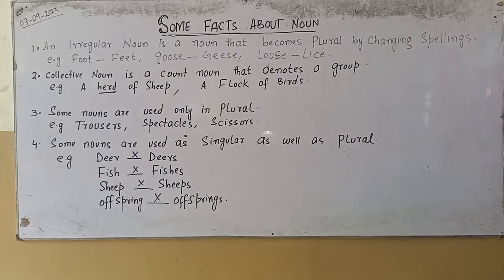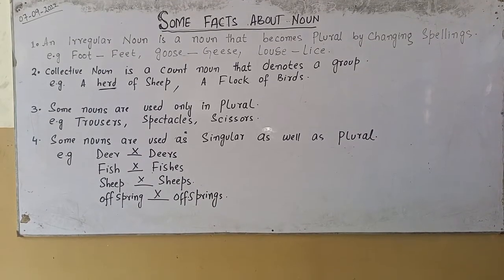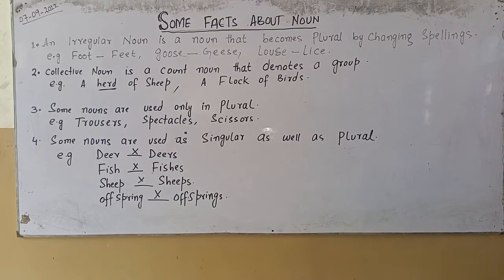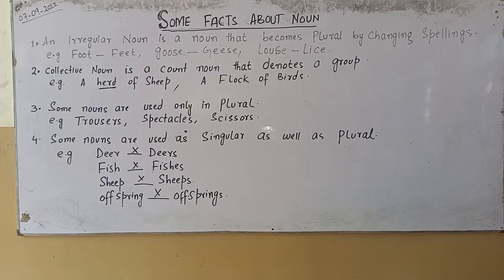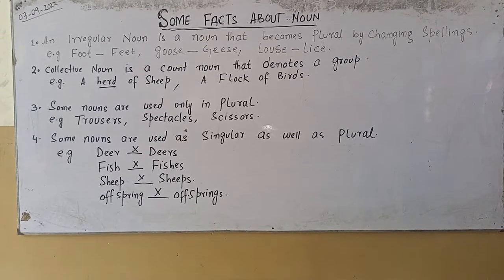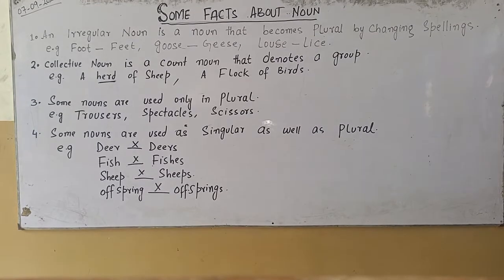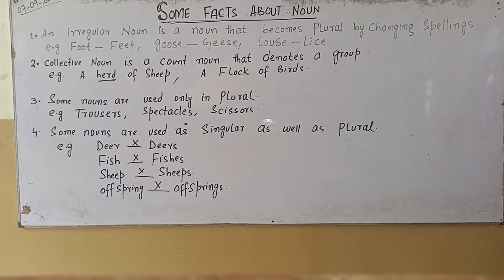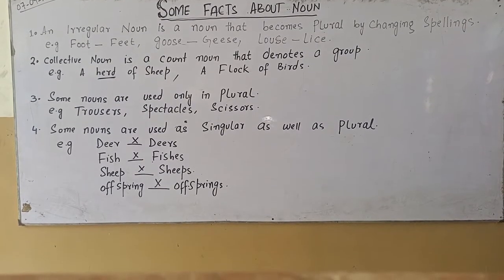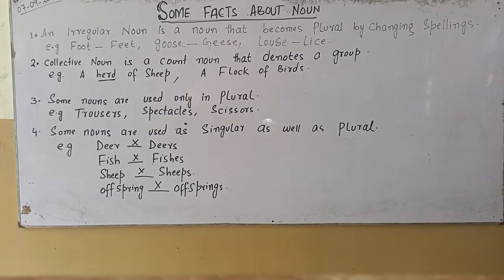Number one, an irregular noun is a noun that becomes plural by changing spellings only. For example, foot as feet, goose as geese, louse as lice.